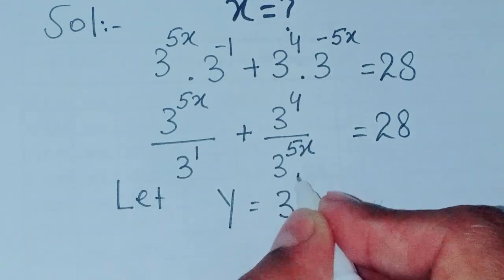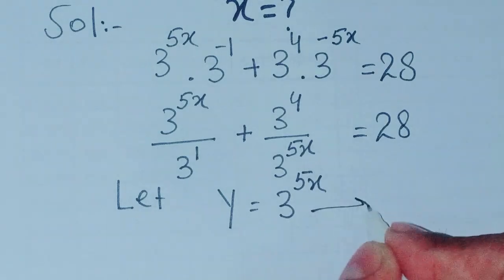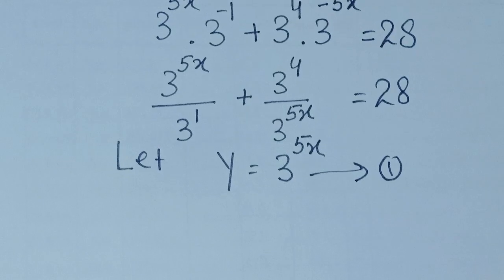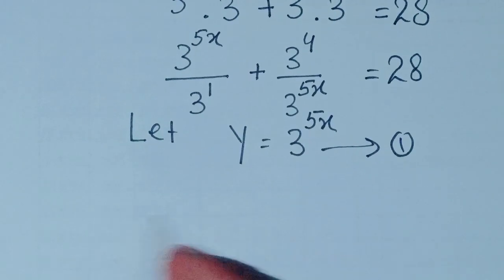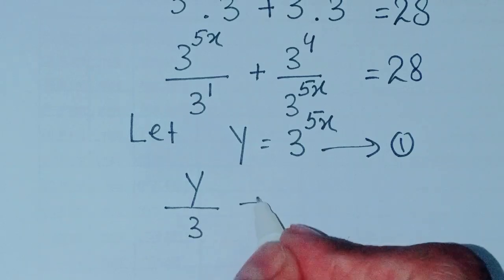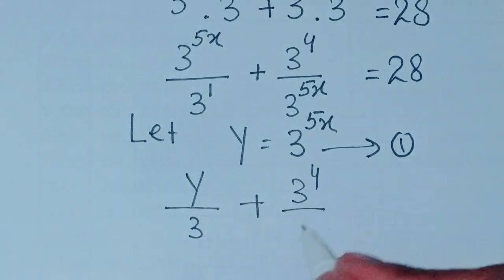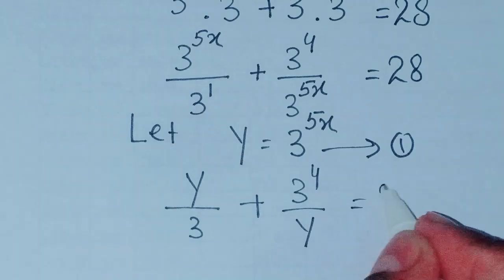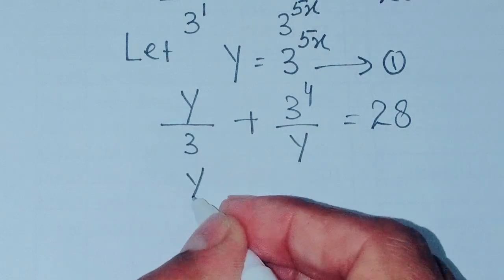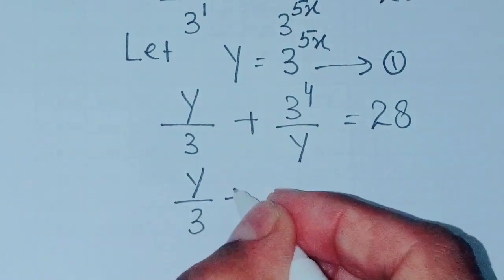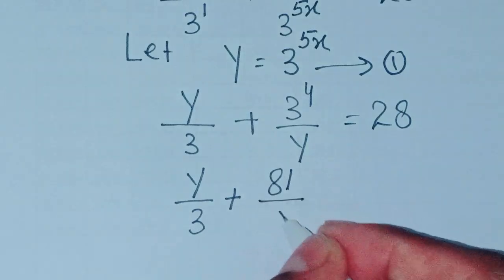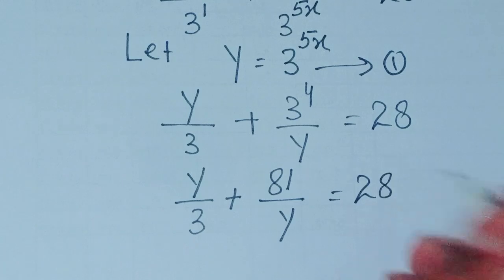Now let y equal to 3 power 5x — we name this equation 1. Substituting, we get y over 3 plus 3 power 4 over y equal to 28. Since 3 power 4 is 81, we have y over 3 plus 81 over y equal to 28.